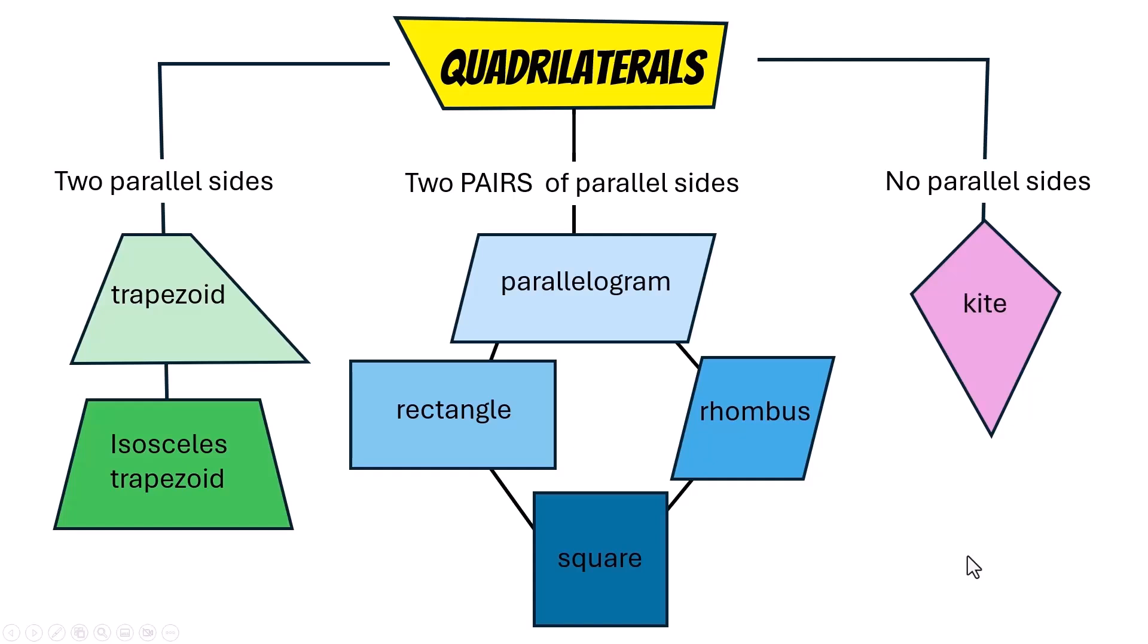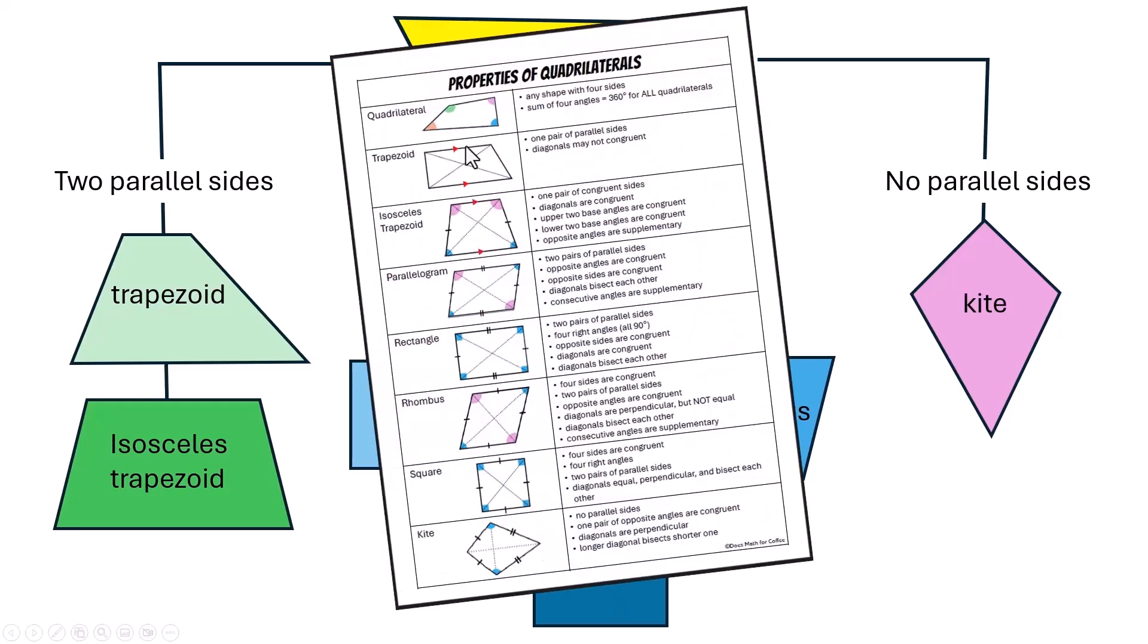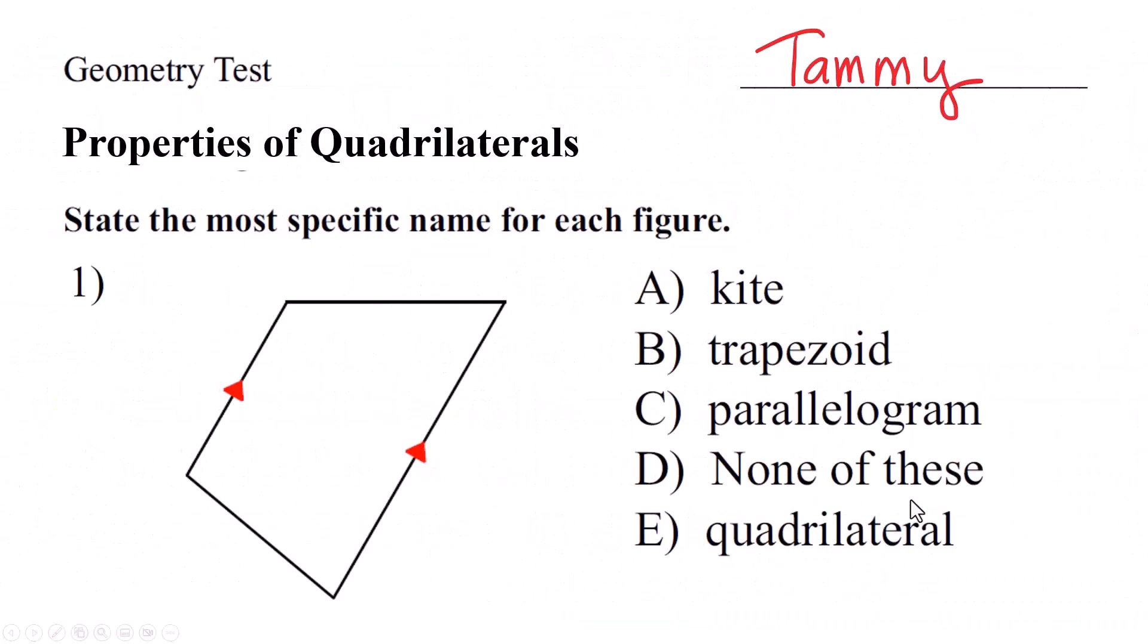Now all of these shapes have their own properties with regards to the relationships between the sides and the angles and the diagonals. So I made a cheat sheet. I'll put a link in the description and maybe I'll put one up here in the corner. You can download this PDF and I'll refer to it as we go when I think we need to.